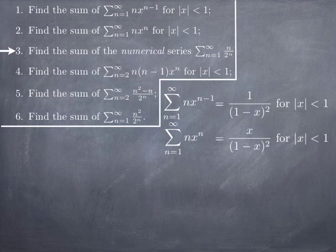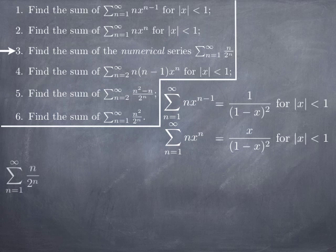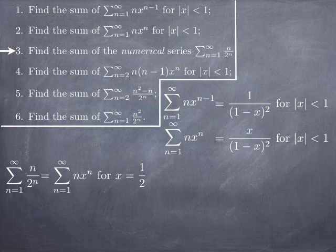In the third question, we want to find the sum of the numerical series from 1 to infinity of n over 2^n. Previously, for numerical series that were neither telescoping nor geometric, we usually could not find the exact sum — only estimate it or justify convergence. But now we can, because n over 2^n equals n multiplied by (1/2)^n. In other words, this is the value of the power series Σ n·x^n when x equals 1/2.